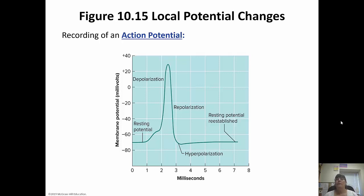However, those potassium gates are really slow to close. So you have an overshoot called hyperpolarization, where it goes even more negative than it's supposed to be. That's when the sodium-potassium pump comes in and re-establishes resting membrane potential.